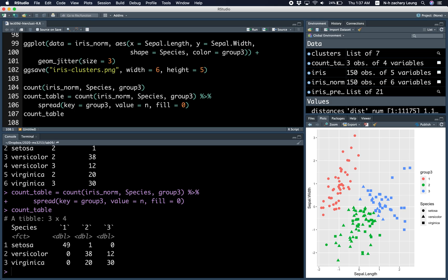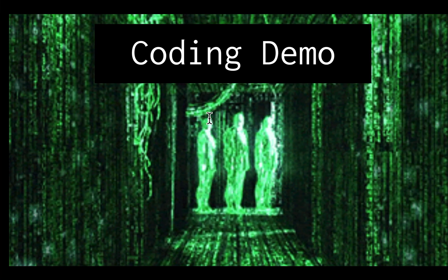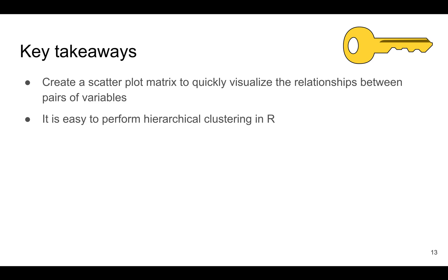So to conclude, you can create a scatter plot matrix that quickly allows you to visualize the relationships between pairs of variables. And I also showed you how to perform hierarchical clustering in R. It's not that difficult.